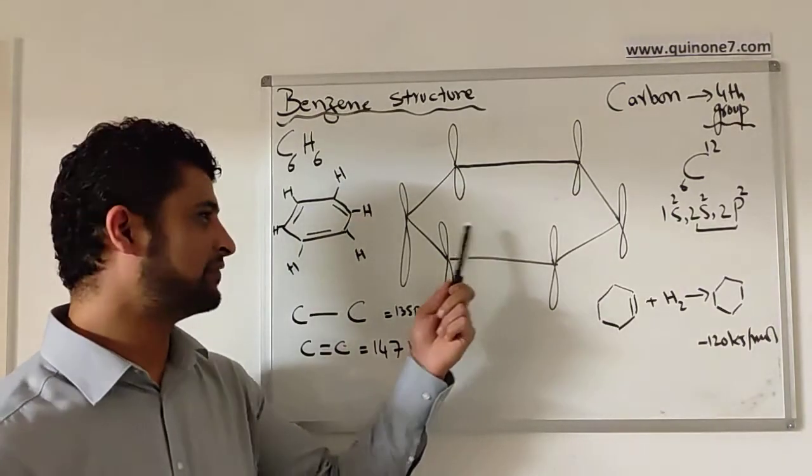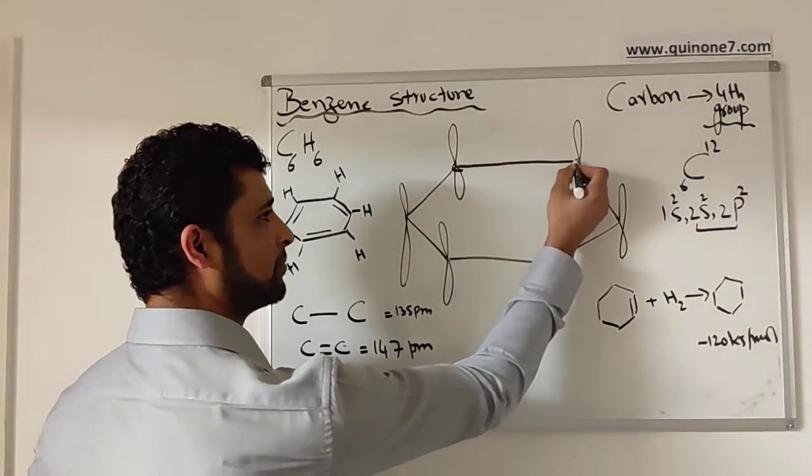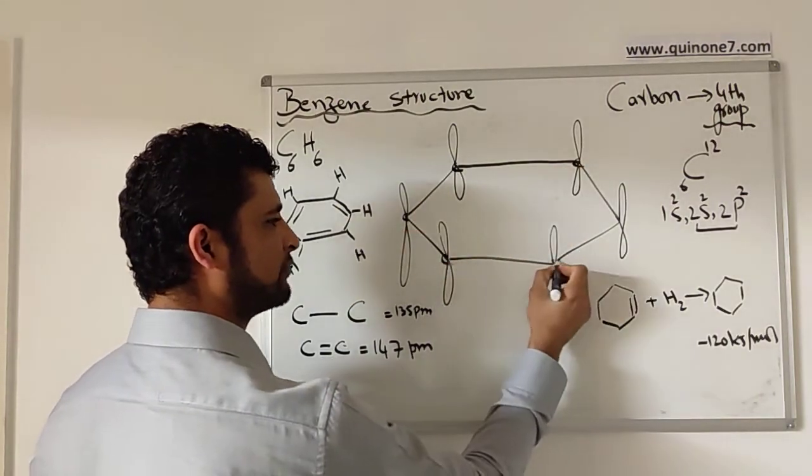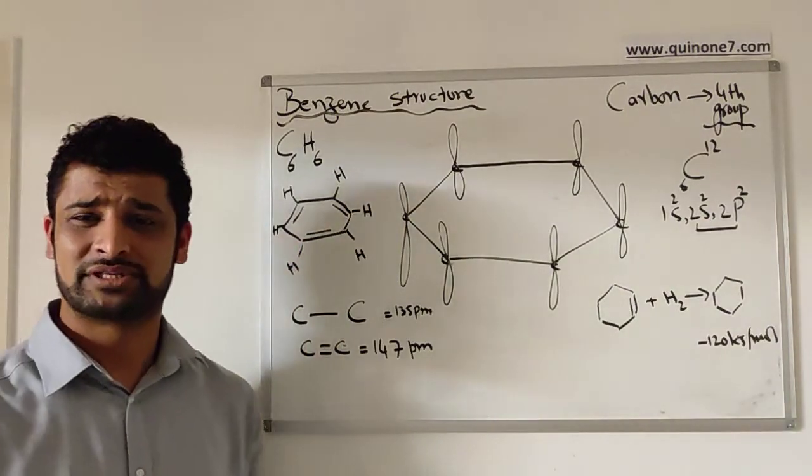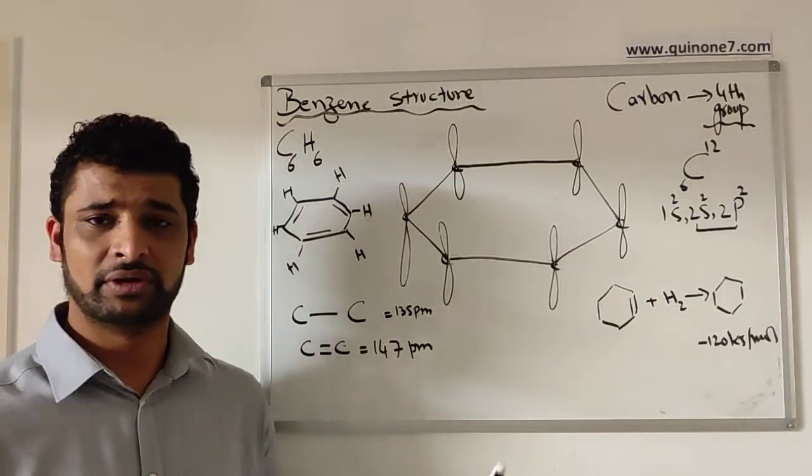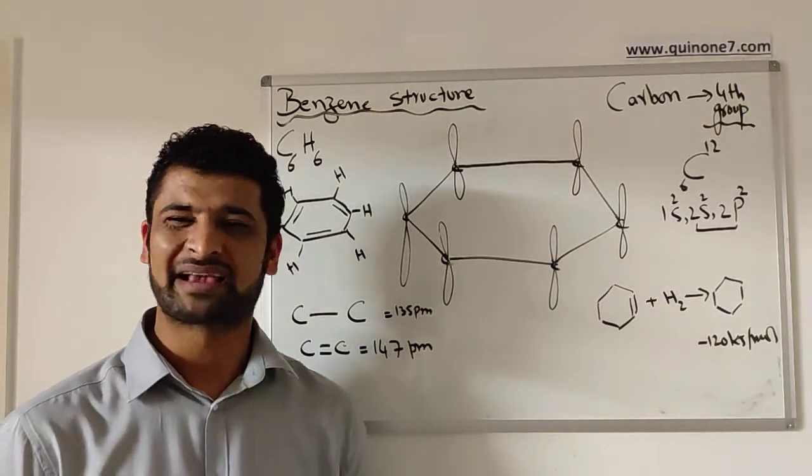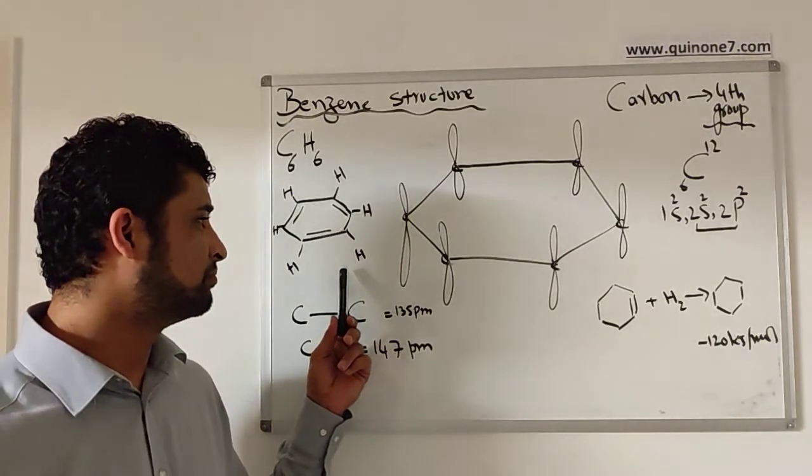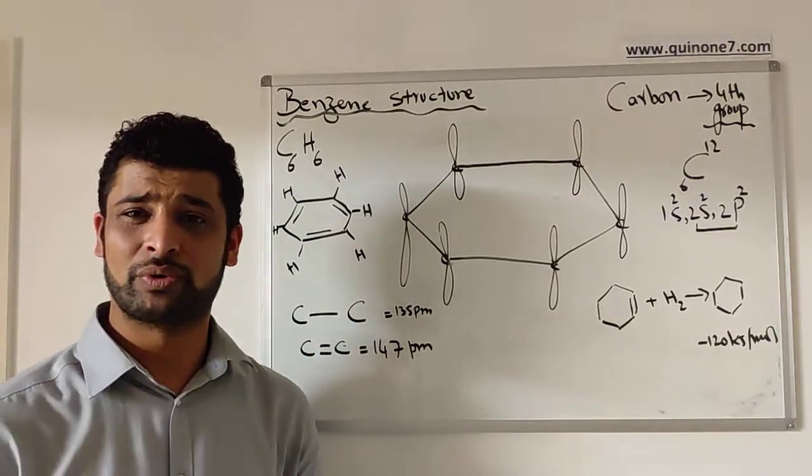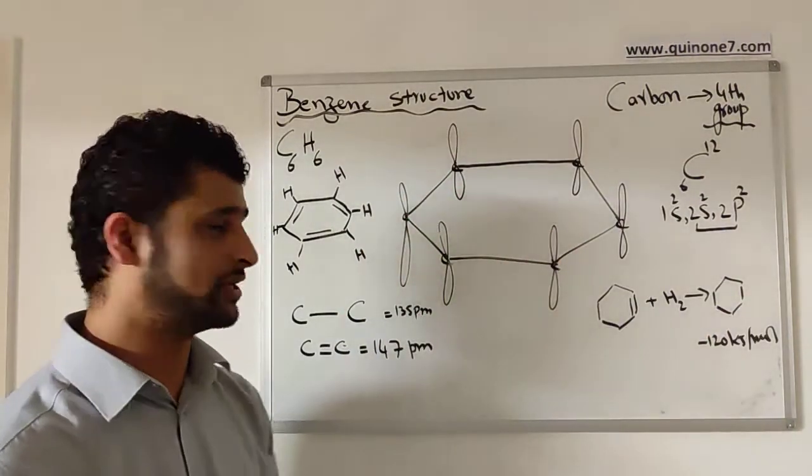Now looking at the benzene structure, these are the carbon atoms. I haven't drawn the hydrogen in this. This is what was suggested by August Kekul. Before that, it had been purified by Michael Faraday back in the 16th century. August Kekul is the one who actually saw the dream and started thinking about six snakes holding the tail of each other.